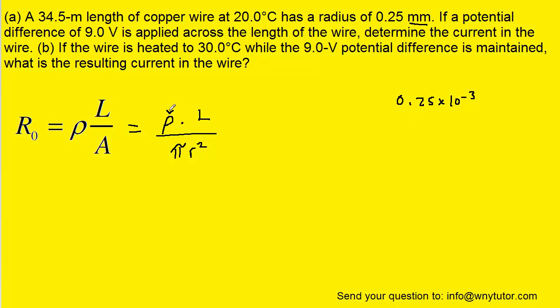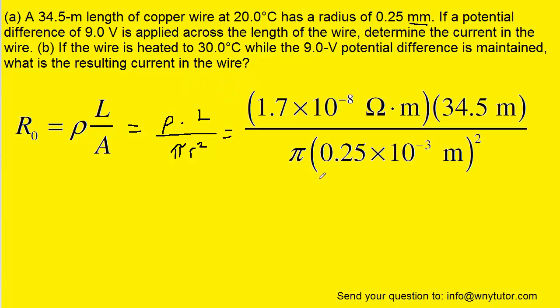Notice that the resistivity, since this is a copper wire, will be 1.7 times 10 to the minus 8 ohm meters. That's a value that you could look up in a table that's present in the chapter. So when we plug in all the known values and compute the resistance, we get approximately 3 ohms for the resistance.